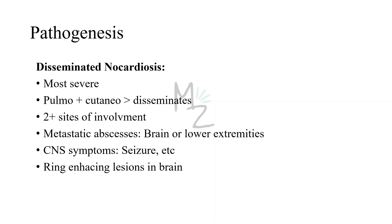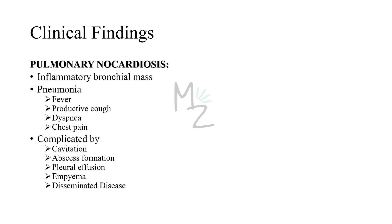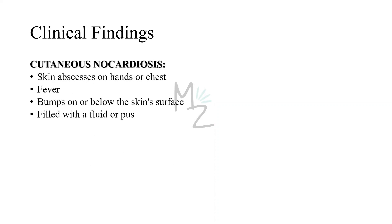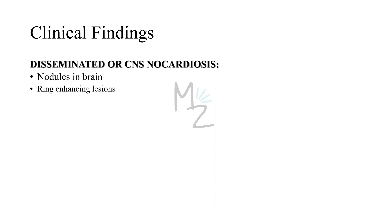Clinical findings: Pulmonary nocardiosis presents as an inflammatory bronchial mass with symptoms resembling pneumonia — fever, productive cough, dyspnea, and chest pain. It is complicated by cavitation, abscess formation, pleural effusion, and empyema. Disseminated nocardiosis is one of the severe complications. Cutaneous nocardiosis presents with skin abscesses on the hands or chest, fever, and bumps on or below the skin surface that may be filled with fluid or pus.